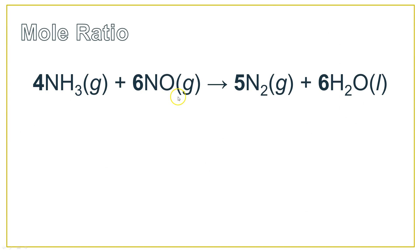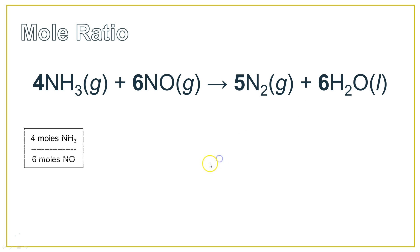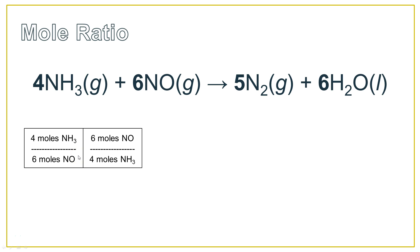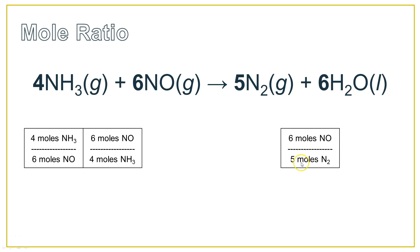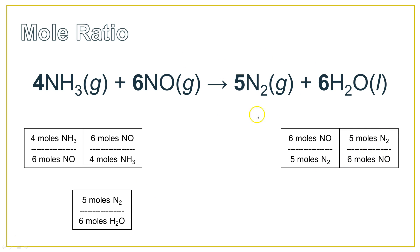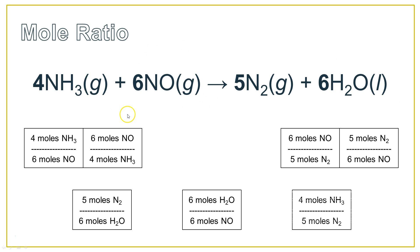Here I have the formula: ammonia plus nitrogen monoxide is going to make nitrogen gas and water, balanced with coefficients four, six, five, and six. So now I can form some mole ratios. Four moles of ammonia reacts with six moles of nitrogen monoxide, or I could flip that. Six moles of nitrogen monoxide reacts to form five moles of nitrogen gas. Five moles of nitrogen gas will also be accompanied by six moles of water, or six moles of water reacts with six moles of nitrogen monoxide. Four moles of ammonia reacts with five moles of nitrogen gas. All of these are capable of being formed off of just this basic equation. The ratio is just looking at the coefficients in front of my balanced equation.